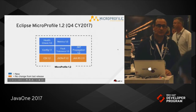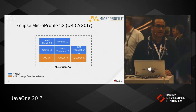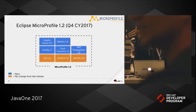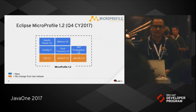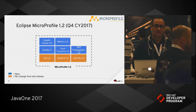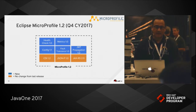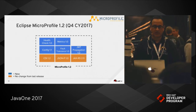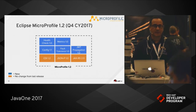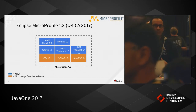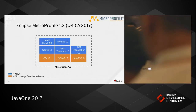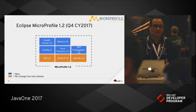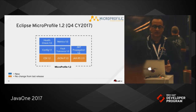Eclipse MicroProfile 1.2 is actually being announced right now, as I speak, over at the Eclipse Foundation booth. It was finished about a week and a half ago but is being officially announced today. In 1.2, Config 1.0 has been updated to Config 1.1. It also includes four new APIs: Health Check, Metrics, Fault Tolerance, and JWT Propagation.